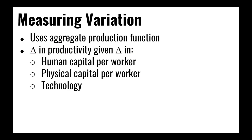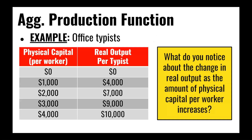We can measure how much more productive we are by looking at an aggregate production function — examining how changes in human capital, physical capital, or technology improve the level of productivity for our workers. For example, we could look at office typists and pour physical capital into helping them by giving them computers. As we increase capital per worker, we get more output in return. But you'll notice that as we increase physical capital by $1,000 per worker increments, the increase in output is diminishing as we move along — we have diminishing marginal returns. There's an upward bound on how much output we can get by adding physical capital, because at some point there are simply too many computers per worker.